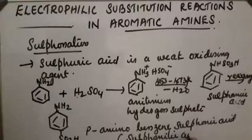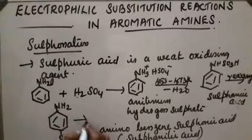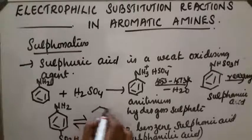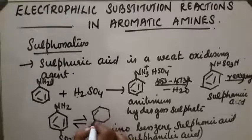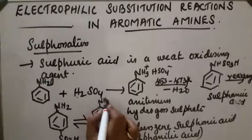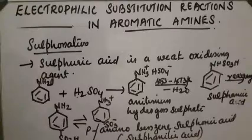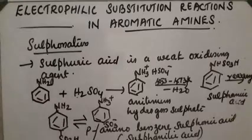Para-aminobenzene sulfonic acid is also known as sulfanilic acid. This derivative contains both basic and acidic groups, so it is dipolar in nature and forms a zwitterion: NH3⁺ and SO3⁻. This is called a zwitterion.